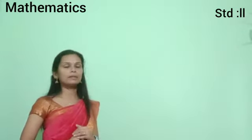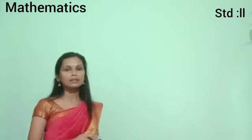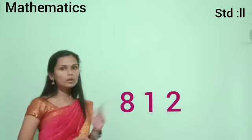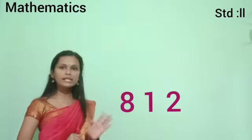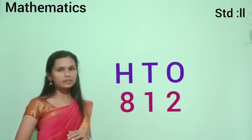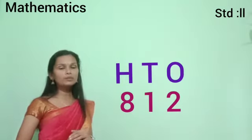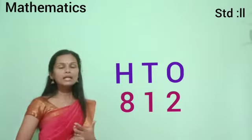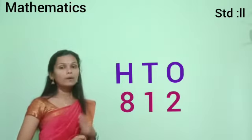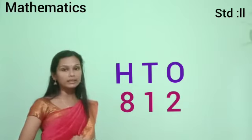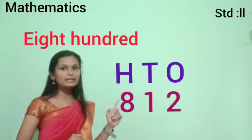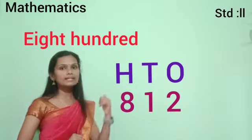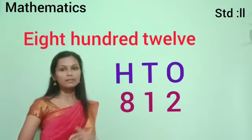Then, one more example. Let us do 812. It is also a 3-digit number, so it has place value — 1's, 10's, and 100's. 2 is in the place of 1's, 1 is in the place of 10's, and 8 is in the place of 100's. Always remember, 10's and 1's should be taken together. So: eight hundred, then 1 and 2 together make 12. So the number name of 812 is eight hundred twelve. Is it clear?